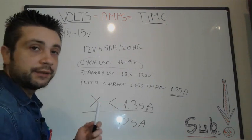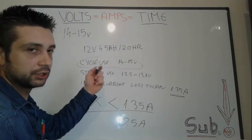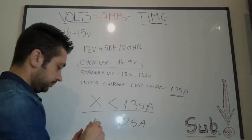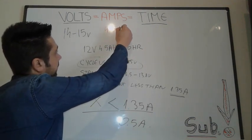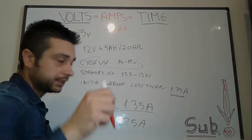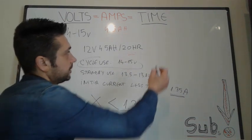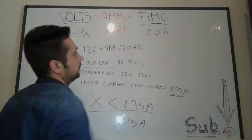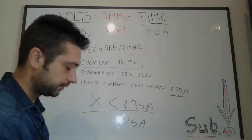Now what we can find next, we have this 4.5 AH. This is the total capacity of the battery. I'm gonna write it down with red for you to remember: 4.5 AH, this is the total amps capacity stored in that tiny battery over there. And of course we have the time which is 20 hours.